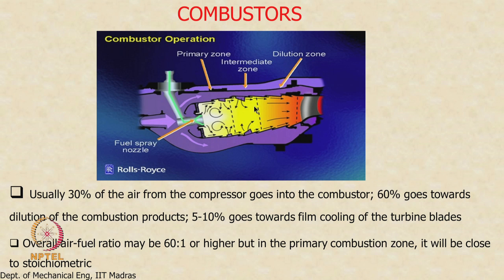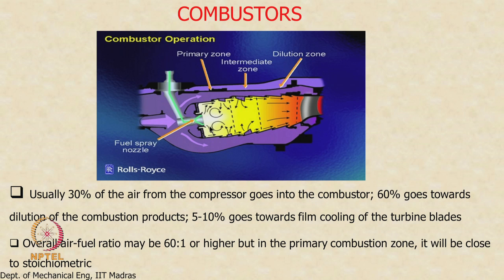Here we are showing the cross-sectional view of a can. The air comes in through the air scoop and fuel is also injected. The amount of air that comes in can be quite high for a gas turbine engine. Only about 20 to 25–30% of that air is sent through the primary port, and the remaining air is diverted to other places. The liner has many holes on its circumference, which allow air to enter the combustion chamber.